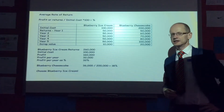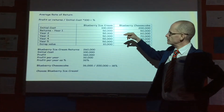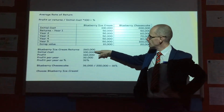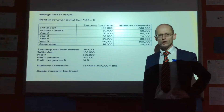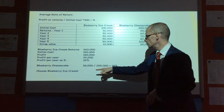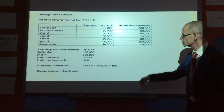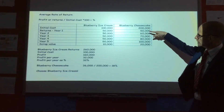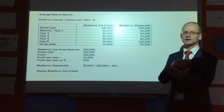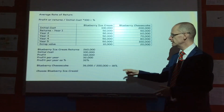If we want to calculate profitability, we look at the Average Rate of Return. We add together all the returns for blueberry ice cream: $260,000 total returns minus the $100,000 initial cost gives a profit of $160,000. Over the five-year period, that's $32,000 profit per year. $32,000 as a percentage of the $100,000 initial investment is 32%. For blueberry cheesecake, all returns sum to approximately $380,000. Subtracting the $200,000 initial cost gives $180,000 profit; divided by five years gives $36,000 per year. $36,000 divided by $200,000 gives a return of 18%.